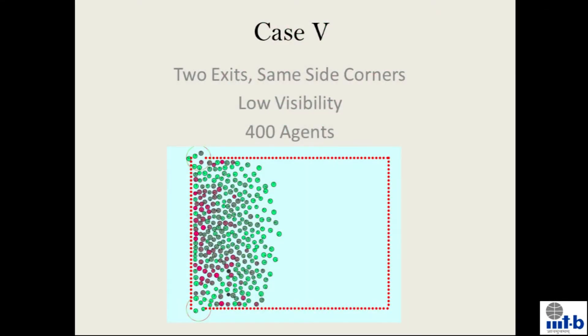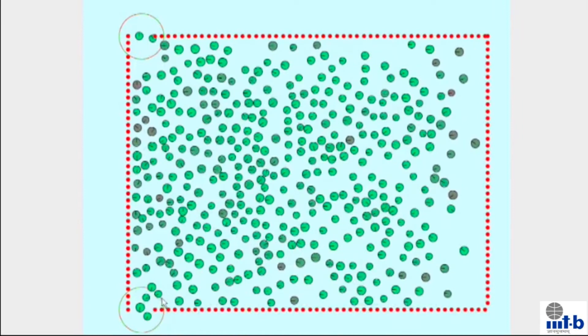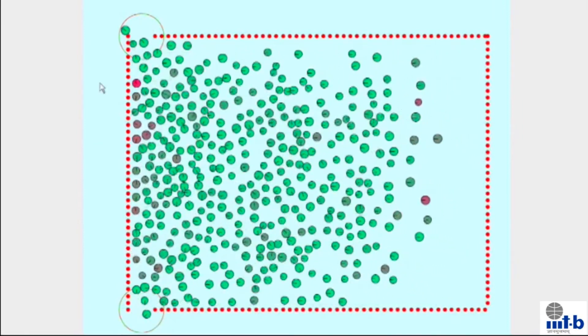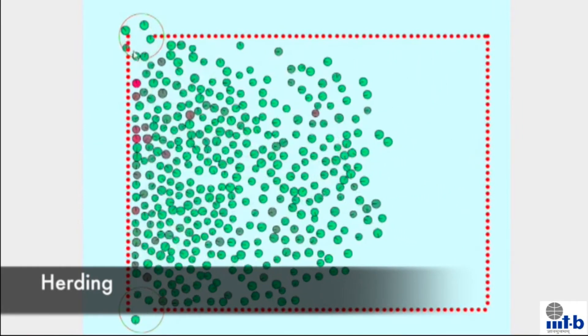This case illustrates the crowd behavior in unknown environment when both the doors are less visible. It clearly shows the herding behavior of crowd. Of course, the evacuation time is very high for this case.